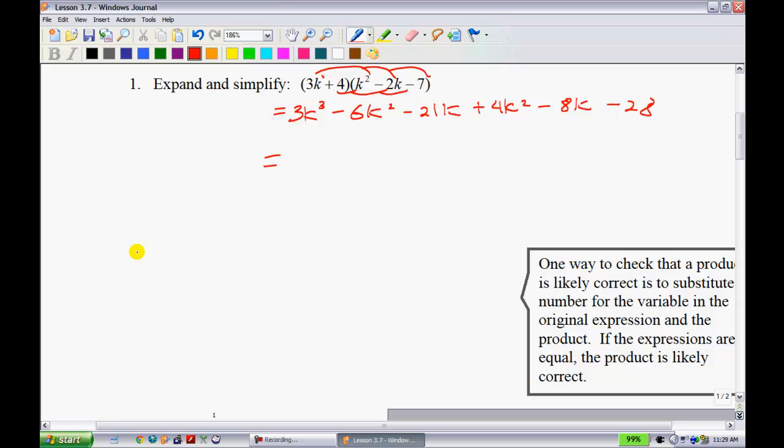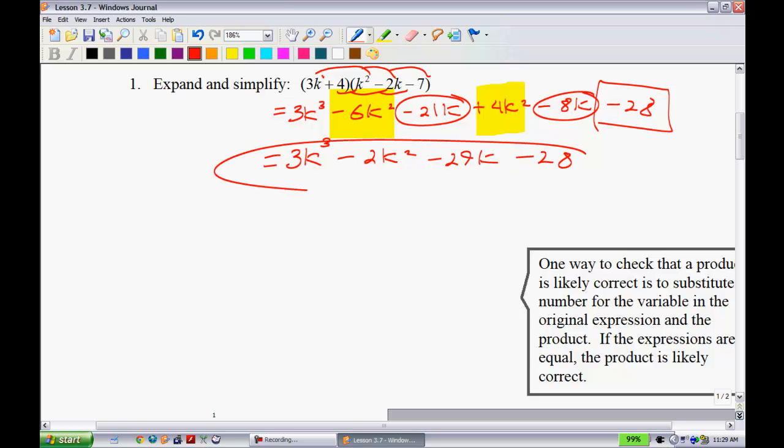So now we have plus 4k squared minus 8k minus 28. Gathering our like terms, we want to put it in descending order of power. So my k cubes are going to go first. If we look here I have these as my k squared, so I'll gather those together. That gives me a negative 2k squared. These two would be just my k's, so that's negative 29k. And then lastly the 28 is on its own over here as minus 28.